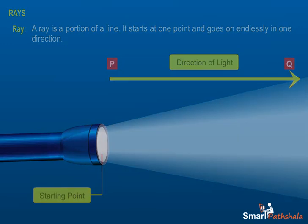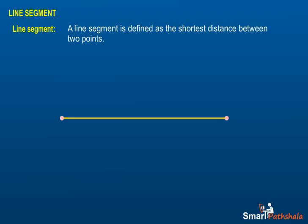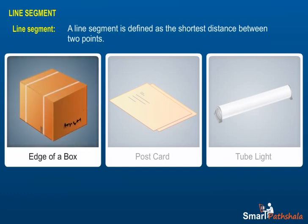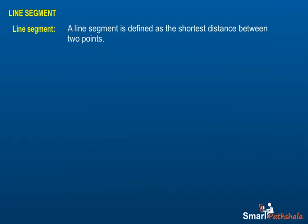Line segments: one, a line segment has two end points. Two, a line segment is made up of unlimited points. Three, examples of a line segment are an edge of a box, a tube light, and the edge of a postcard. Four, a line segment is the shortest route between two points. The points are called the end points.